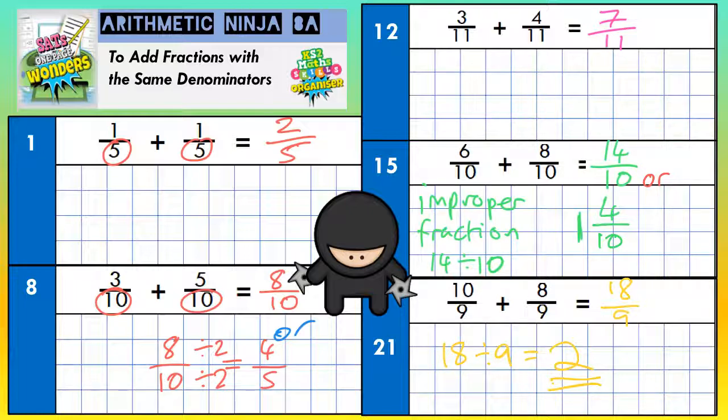So eighteen-ninths, although it is technically right, they don't want to see you leaving it as eighteen-ninths. Because eighteen-ninths does work out to be exactly two whole ones. So a much better answer is two whole ones. And you should really write that as your answer, otherwise you might lose the mark for eighteen-ninths.